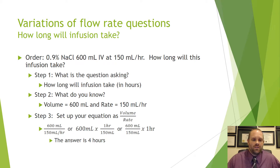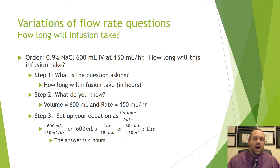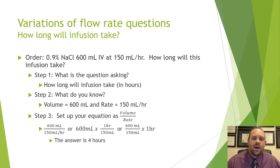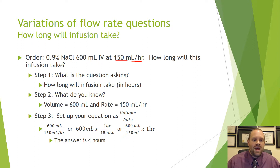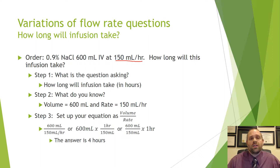Let's look at some variations. You might see a question where instead of asking for the rate, they want to know how long the infusion will take. In this example: 0.9% sodium chloride, 600 milliliters IV at 150 milliliters per hour. Notice they give you the rate. How long will this infusion take? If no specific unit is mentioned, we can safely assume they mean hours.